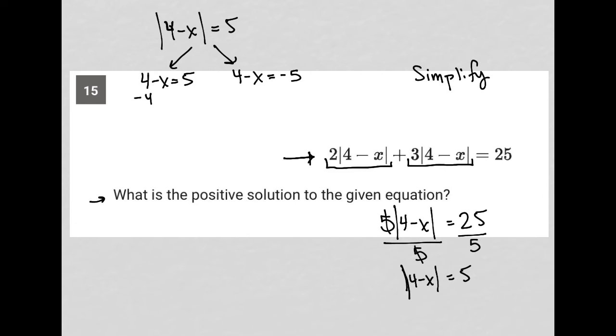So here I'm going to subtract four from both sides. I'm left with negative x is equal to positive one. I can then divide both sides by negative one. And I'm left with x is equal to negative one. So that's not the solution we want, because we want the positive solution. So our positive solution must be over here.